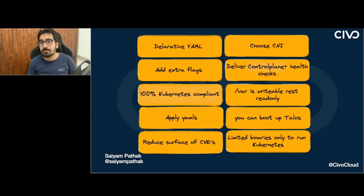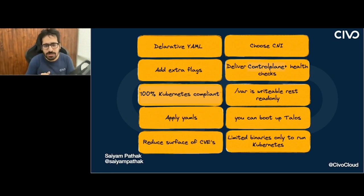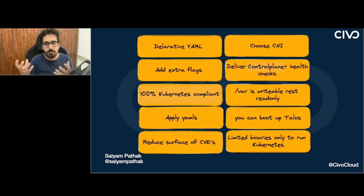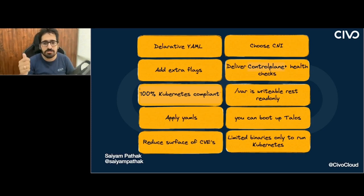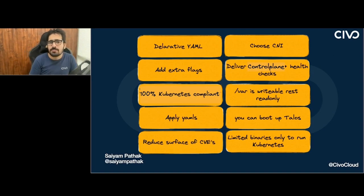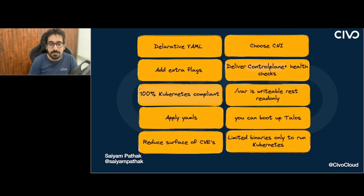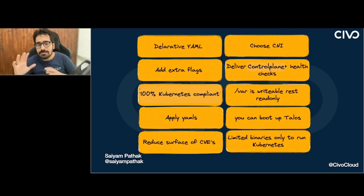You can also apply YAML files — static manifest files — so when you create a cluster you can have a predefined set of YAML files created. You can boot up Talos on bare metal using PXE booting, or with ISO images. Since Talos reduces all attack surfaces like SSH and has a read-only filesystem, it automatically reduces the surface of CVEs. It has only a limited set of binaries to run Kubernetes, and upgrades are atomic — a very special power of Talos. With version 1.2.0, you can actually see what's happening during an upgrade.